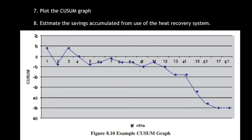Step 7: plot the QSUM graph. Take a 0th point at center since values are both positive and negative. The maximum positive value here is about 10, and the minimum goes down to about −50 to −60. So the y-axis runs from −60 up to +10 in increments of 10. The x-axis is the month number from 1 to 18. This is how you draw the QSUM graph.